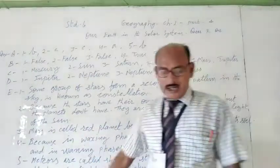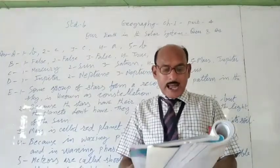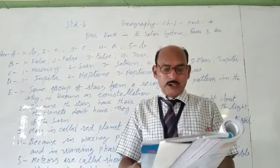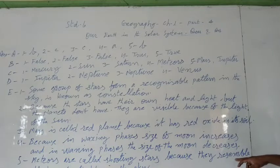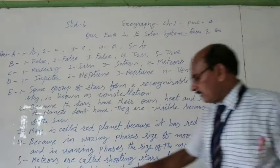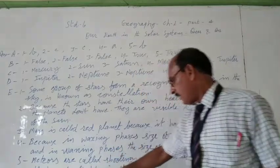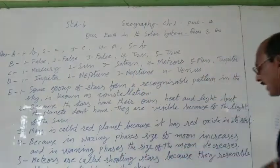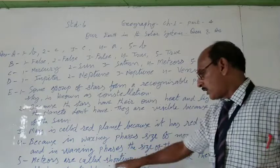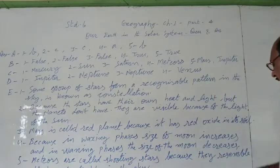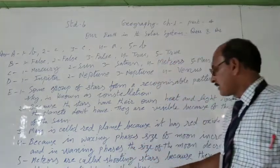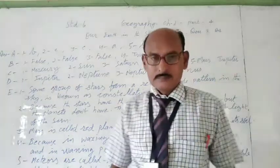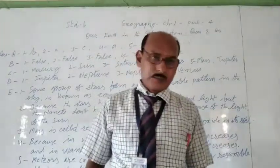Now the last question, fifth one. Why are meteors called shooting stars? Meteors are called shooting stars because they resemble flashes of light in the sky. So answer questions we have completed, children.